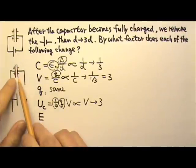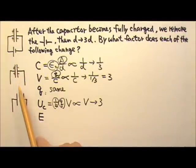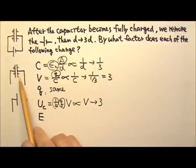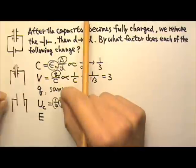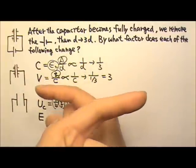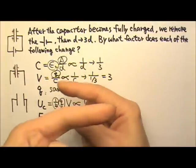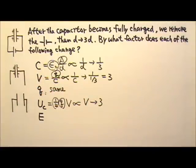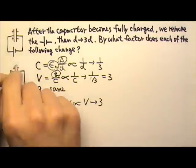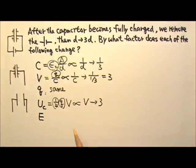The extra energy comes from the person who pulls the plates apart. Because those two plates are oppositely charged, they attract each other. So the person who pulled the plates apart has to pull hard. The pulling force goes outward, and the displacement goes in the same direction. So the work done by the person is positive. The person has to do positive work to provide that extra energy.